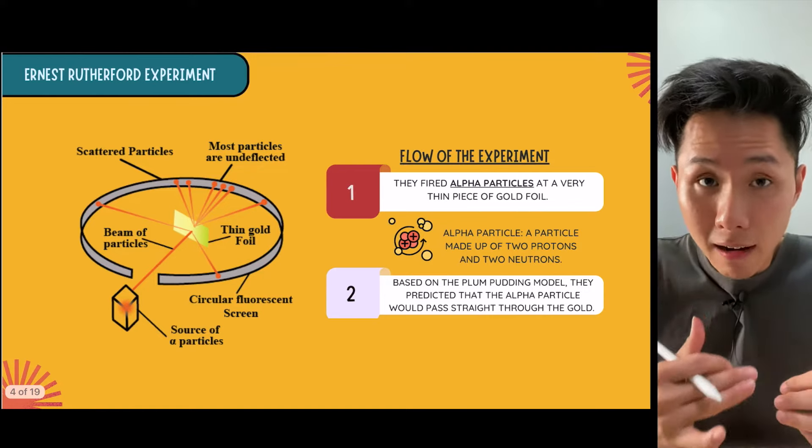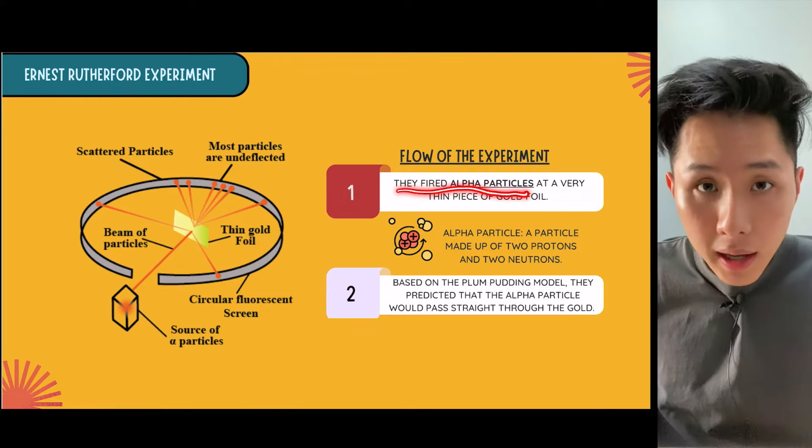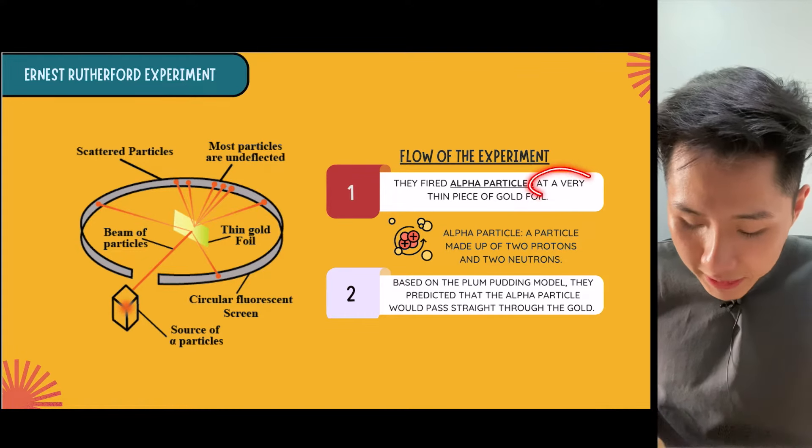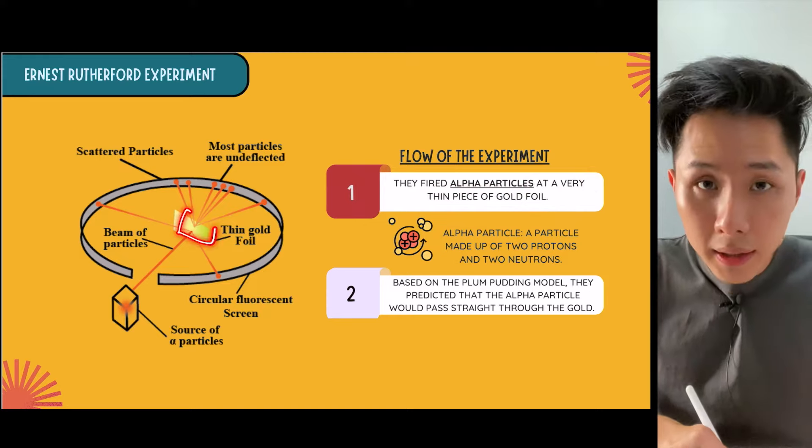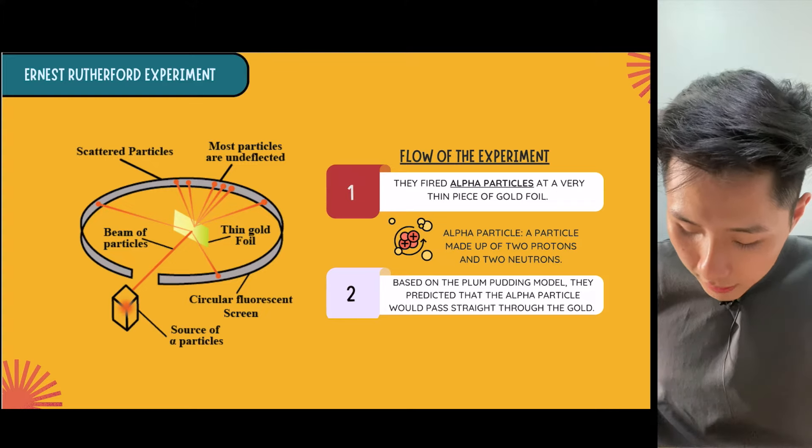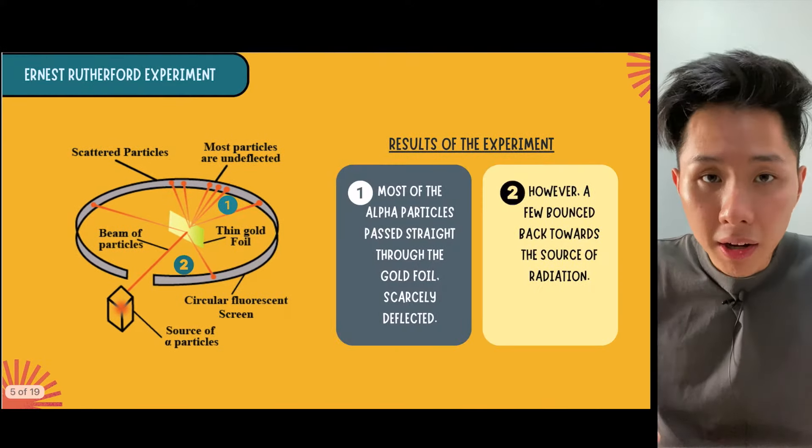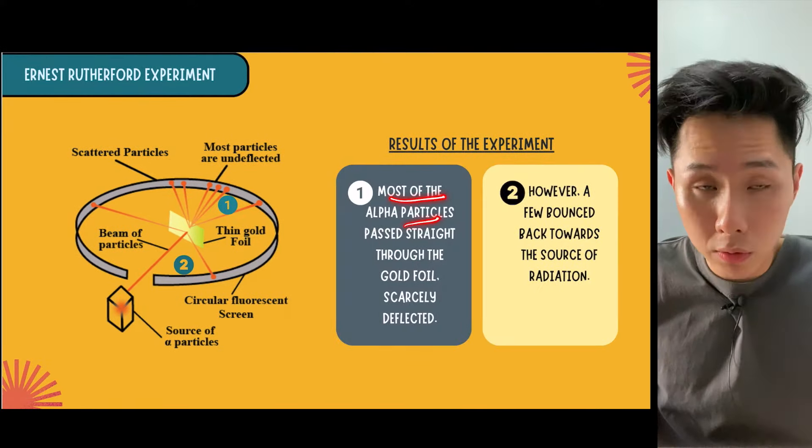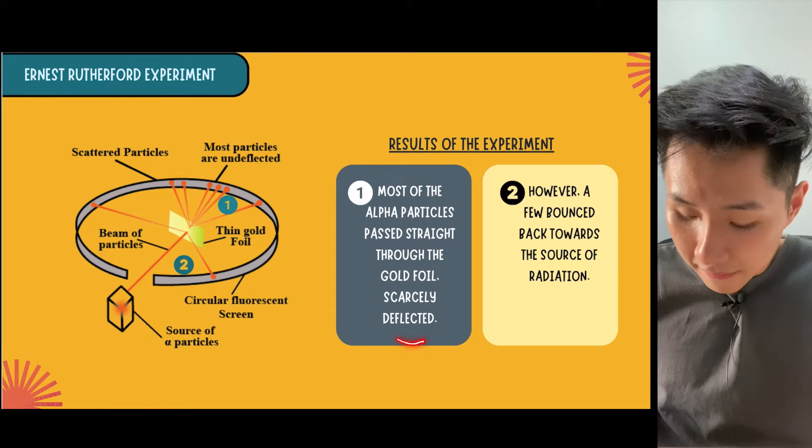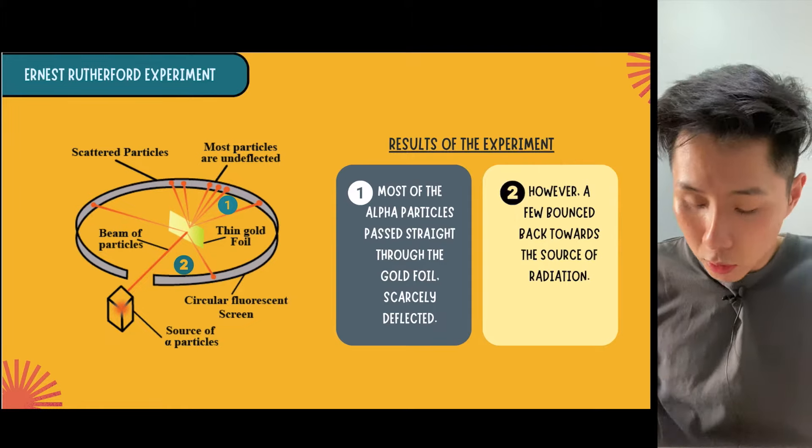The experiment that they carried out is this: Rutherford and the team fired alpha particles - a particle made up of two protons and two neutrons - at a very thin piece of gold foil. If the atom really follows the plum pudding model, they predicted that the alpha particle should pass straight through the gold. What they found is that most particles passed straight through as predicted, some deflected slightly, and a few alpha particles actually bounced back towards the source of radiation.